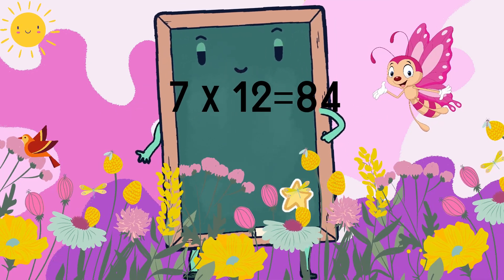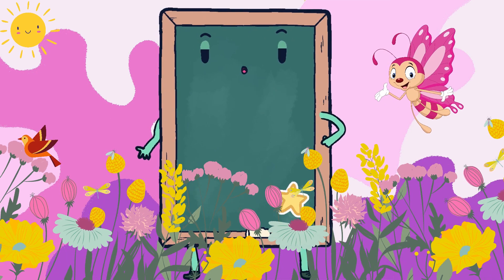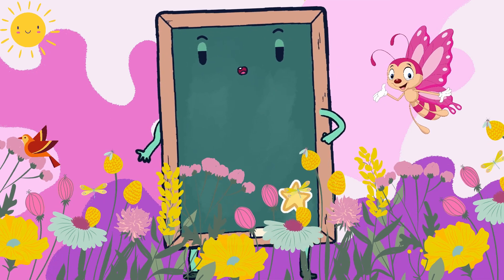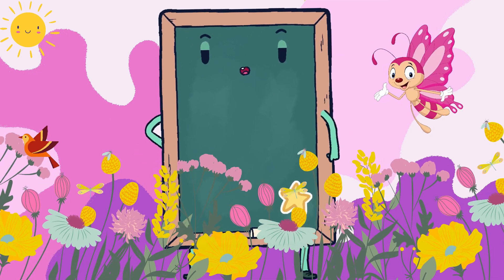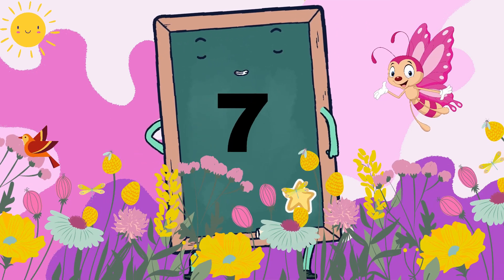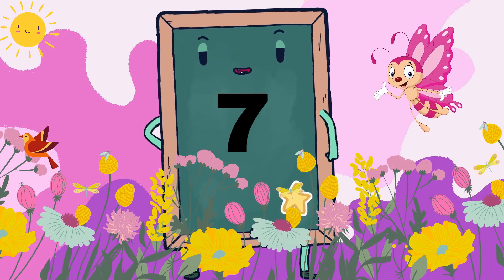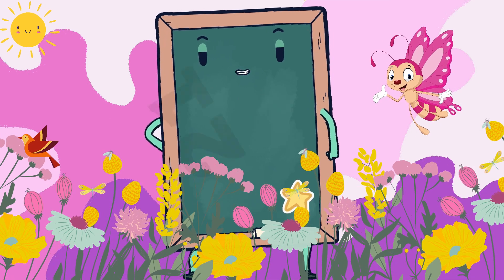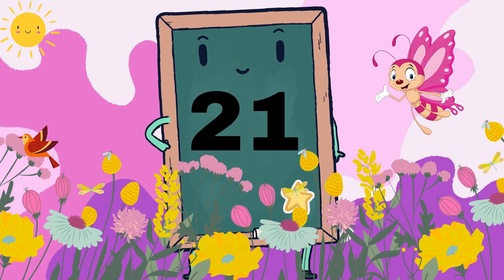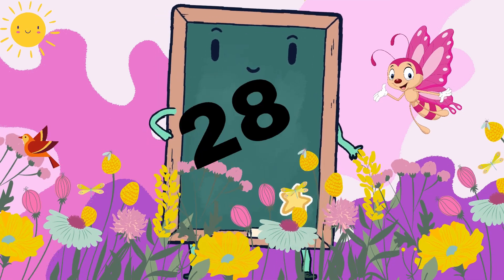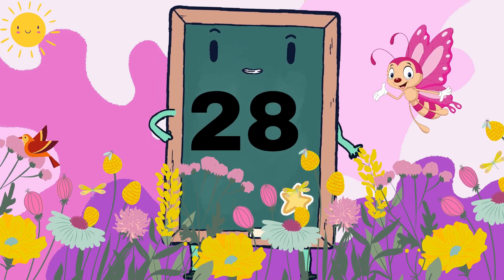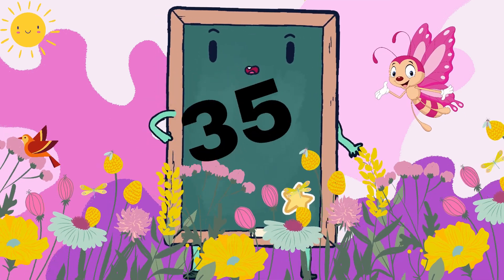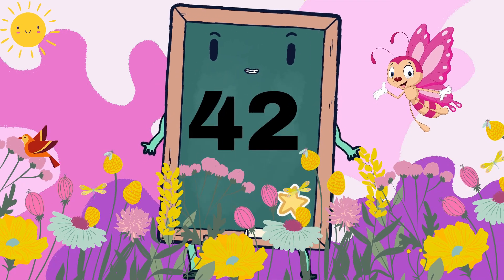So kids, let's quickly do it once again. 7 ones are 7, 7 twos are 14, 7 threes are 21, 7 fours are 28, 7 fives are 35, 7 sixes are 42.